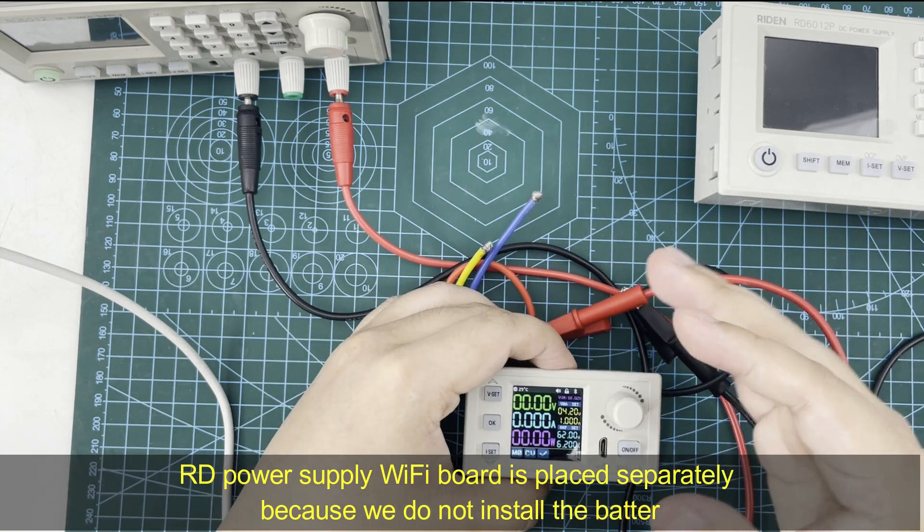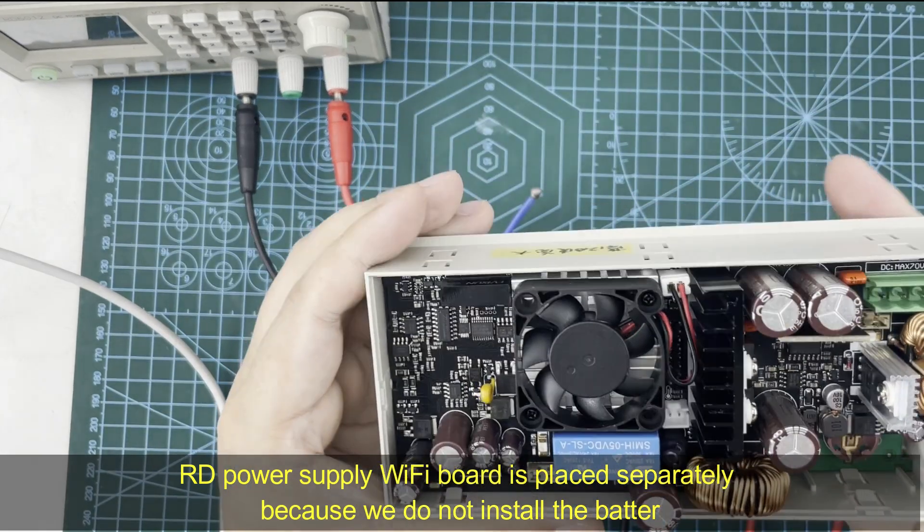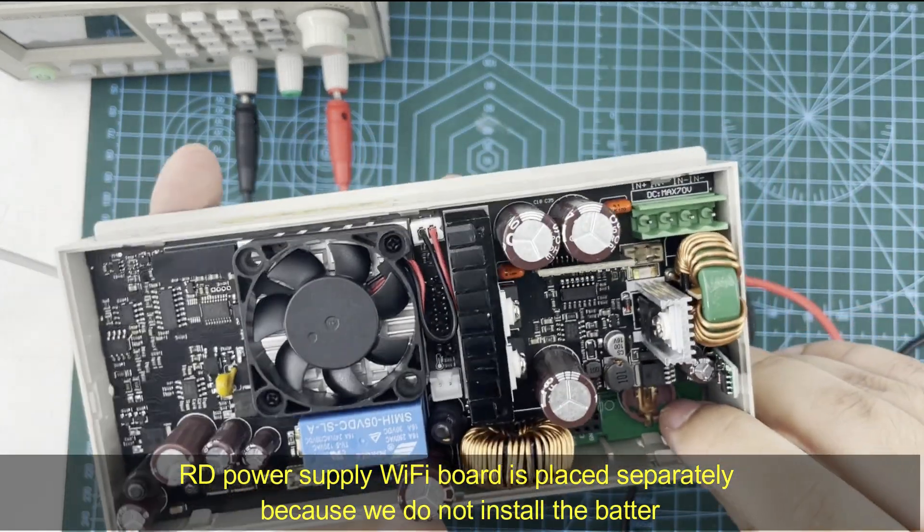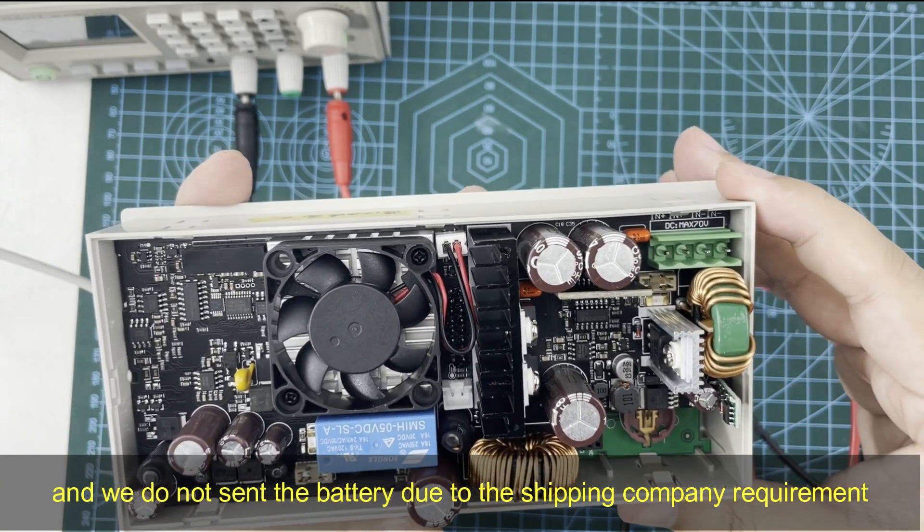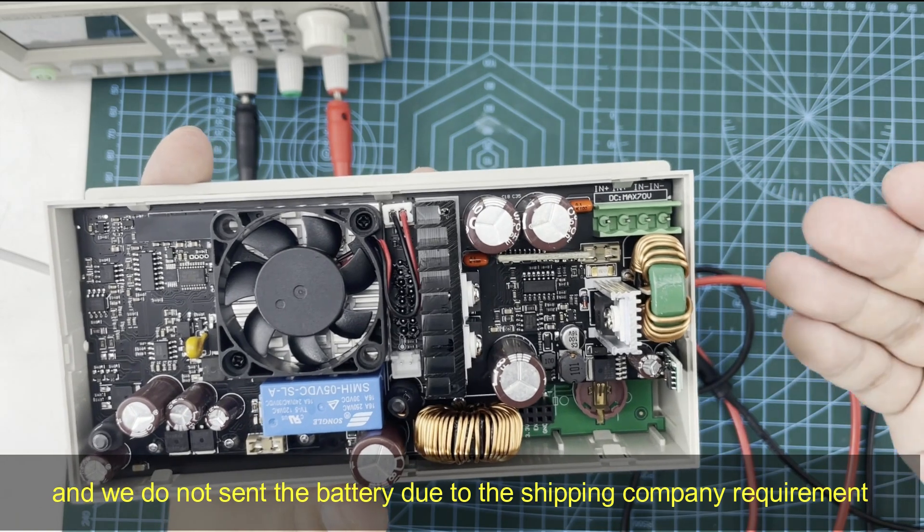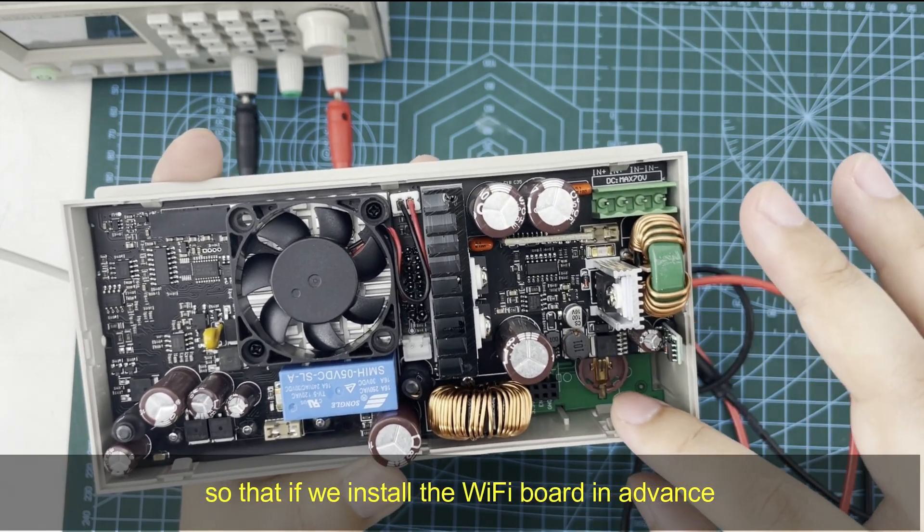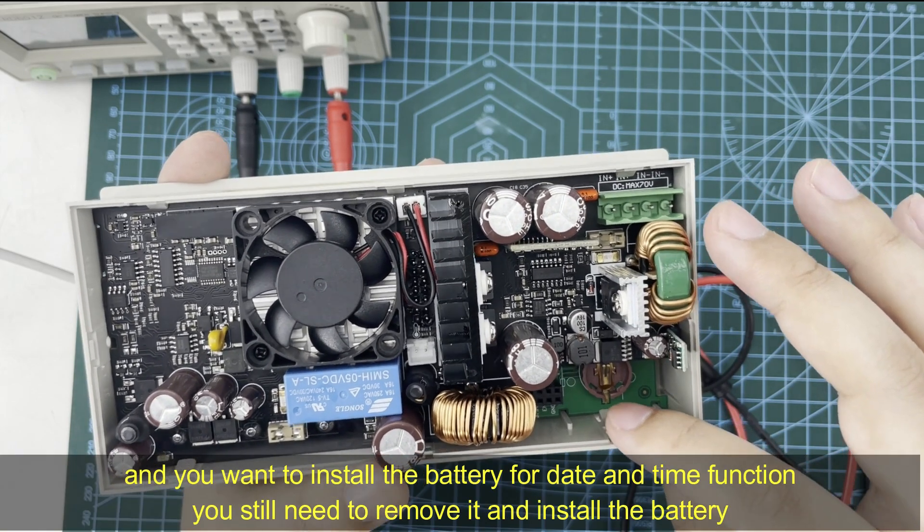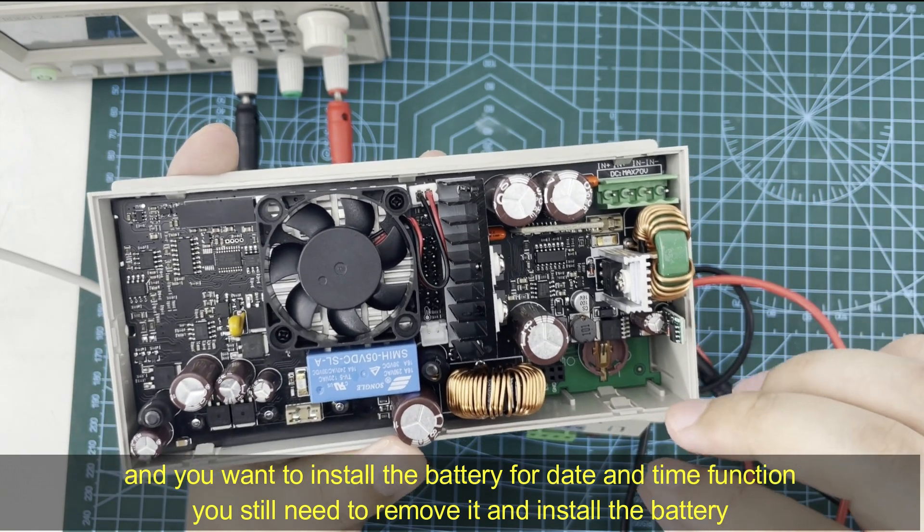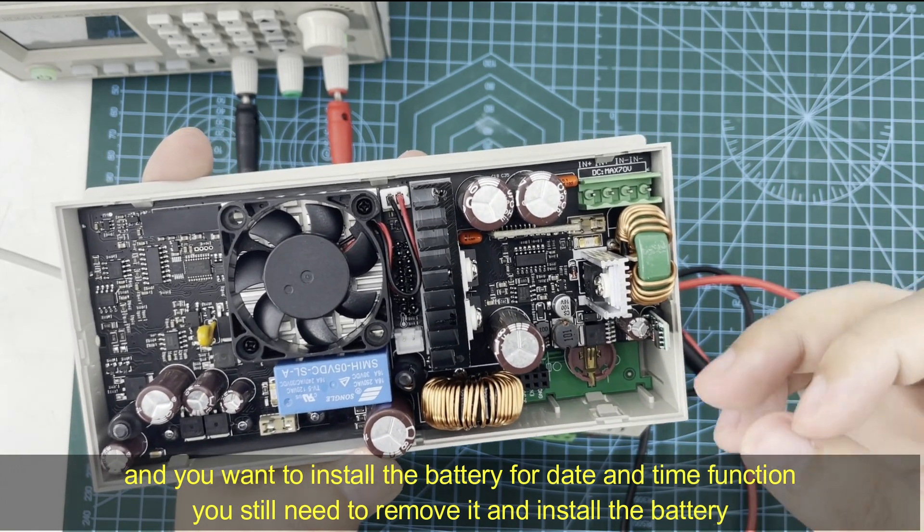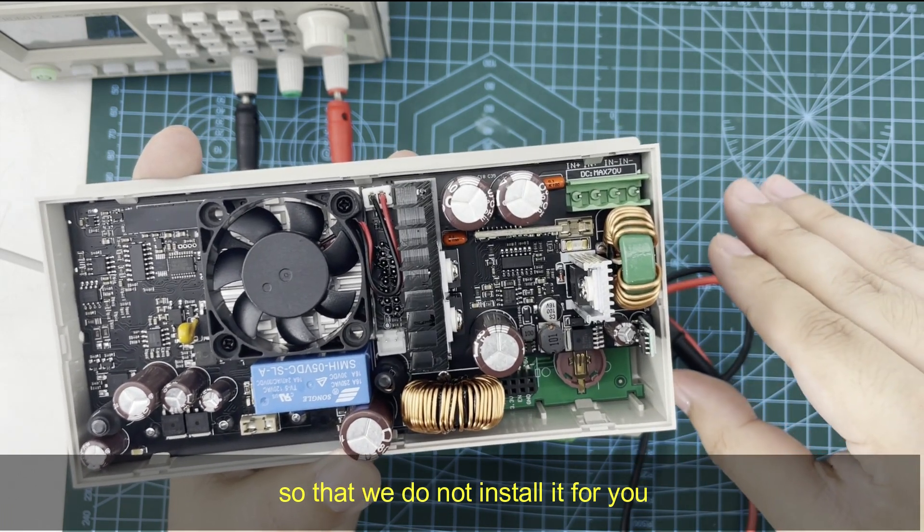RD series power supply Wi-Fi board is placed separately because we do not install the battery. We do not send the battery due to the shipping company requirement. So if we install the Wi-Fi board in advance and you want to install the battery for date and time function, you need to remove the Wi-Fi board and install the battery. So we do not install it for you.